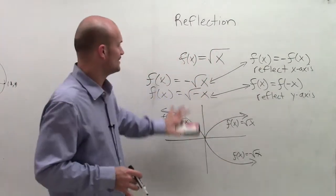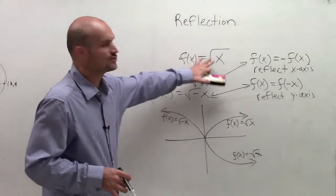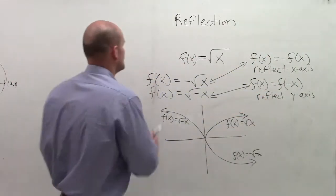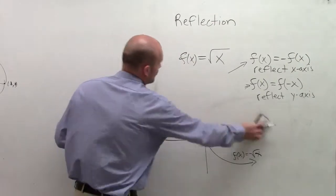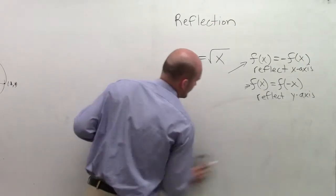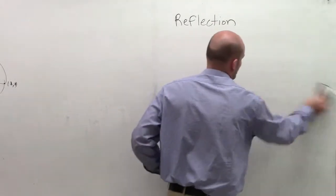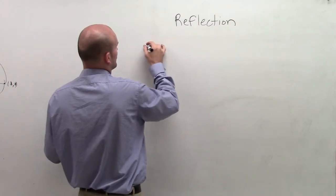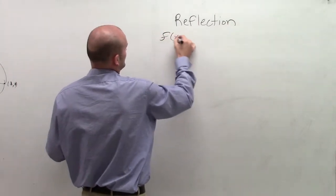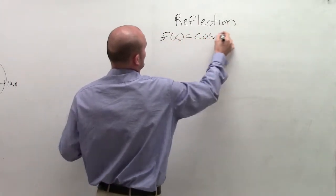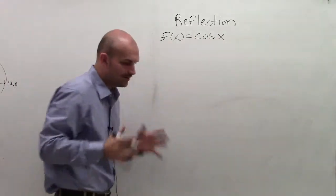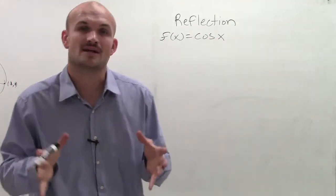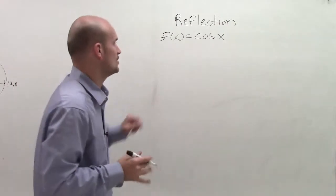We're not going to be dealing with the square root of x going forward. We need to remember these two definitions of reflections, but what I want to talk about right now is the cosine function. So let's say f(x) equals cosine of x, and I want to look at the reflection — particularly the x-axis reflection of cosine of x.